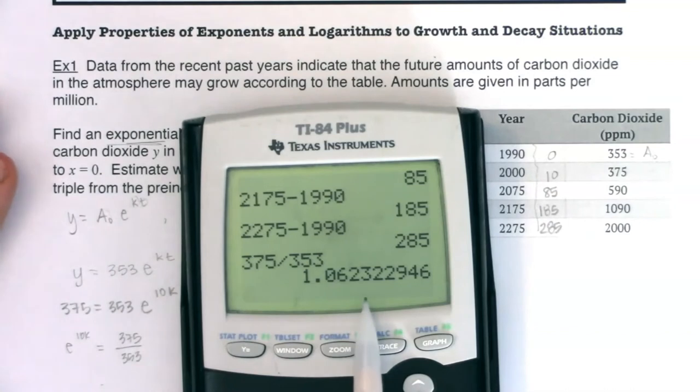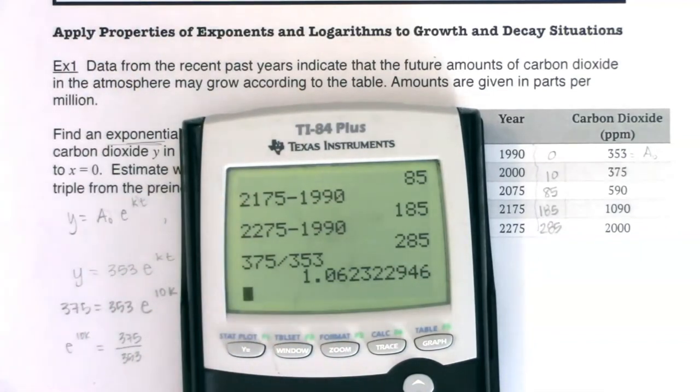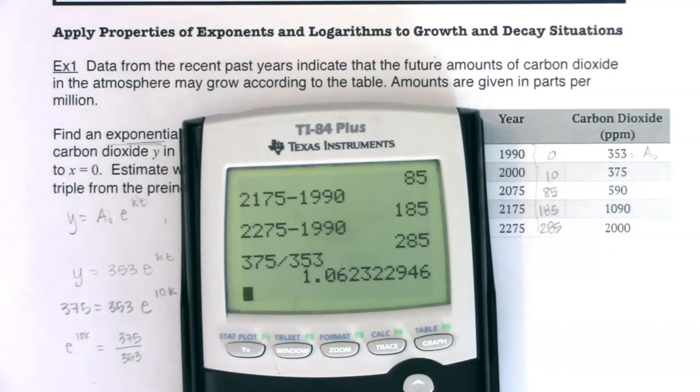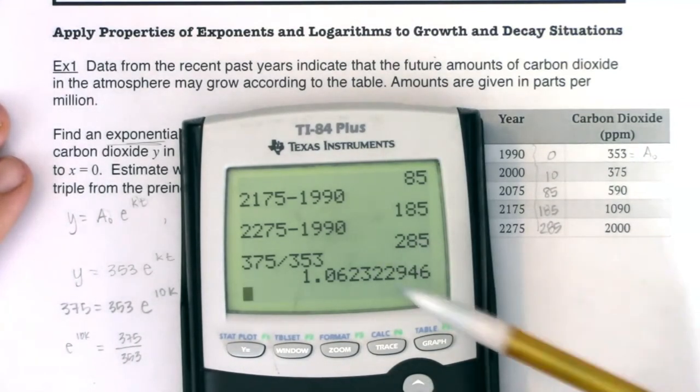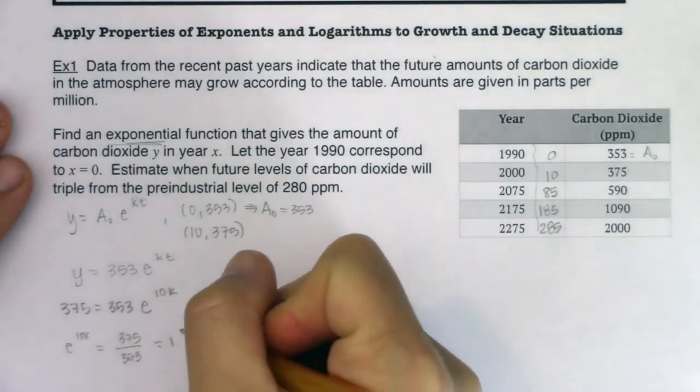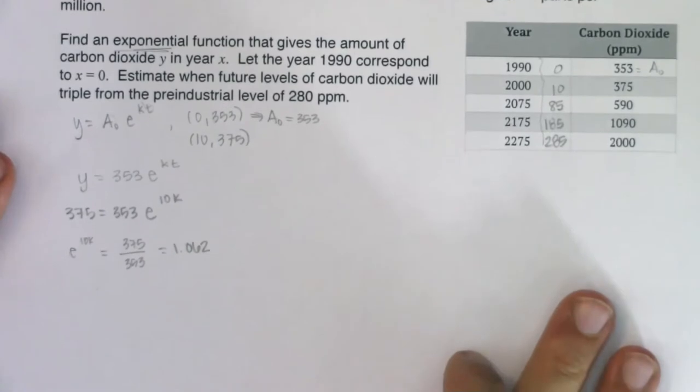Now I can crunch that number in my calculator. So we've got 375 divided by 353, I'm looking at about 1.062. As soon as you start rounding on your calculator, you will severely or potentially severely alter your end answer. So if you want to be super precise, just leave this expression as is and crunch the number at the bitter end. When we start doing this problem in the next section using exponential regression, you don't have to worry about that. I'm not going to be a super stickler for when you round, I just want you to hear it.